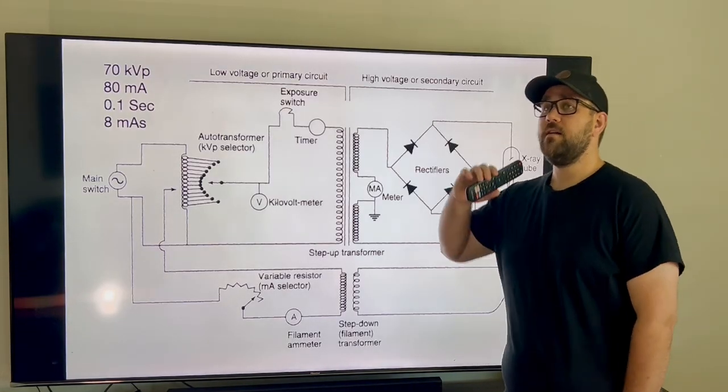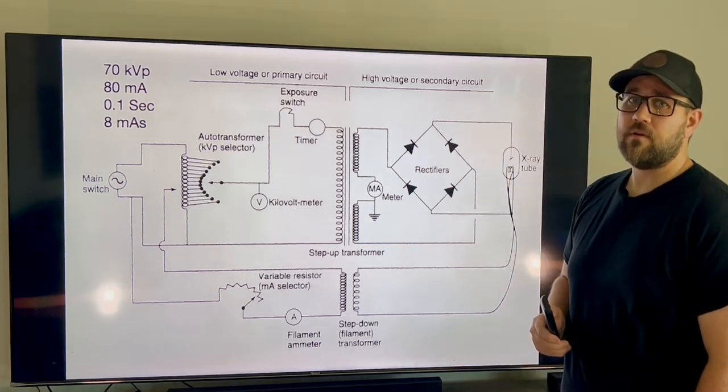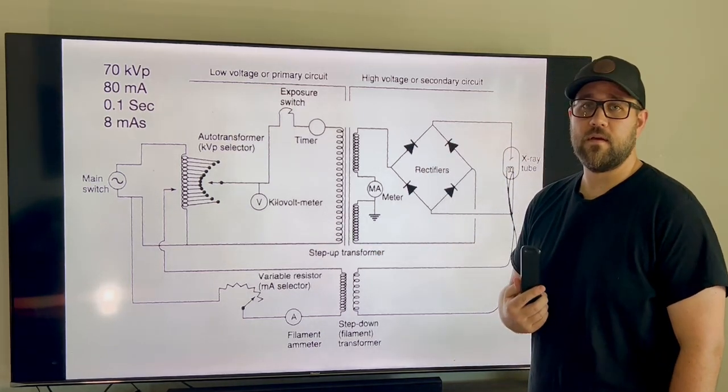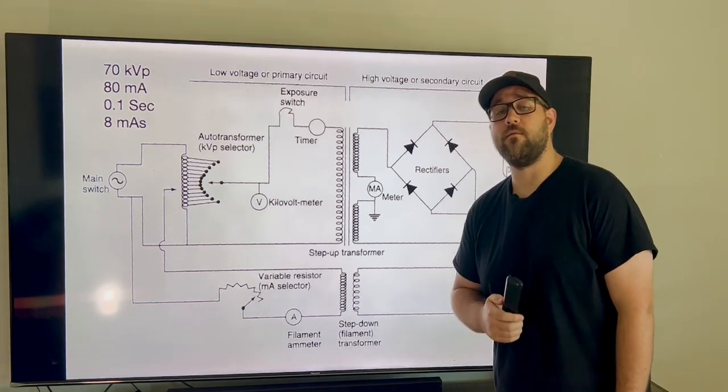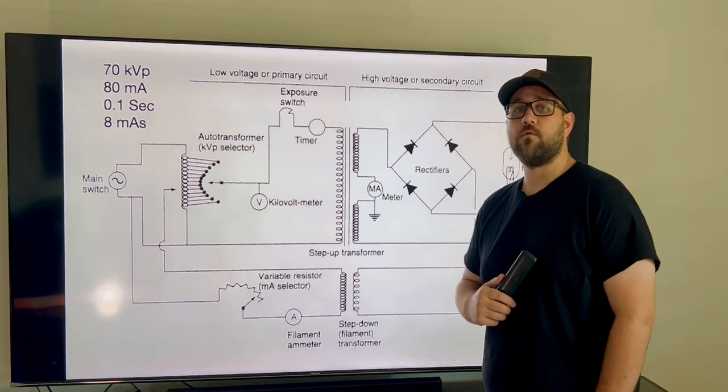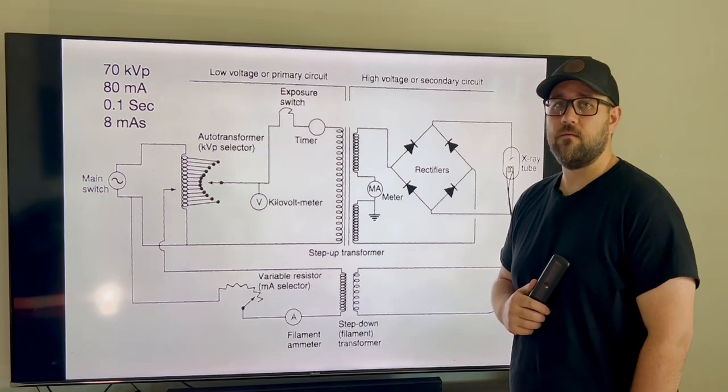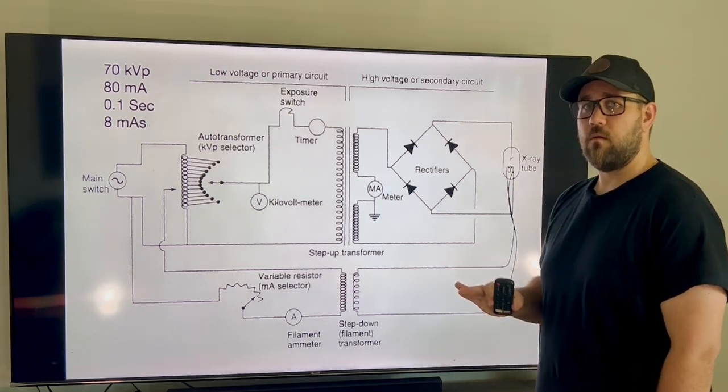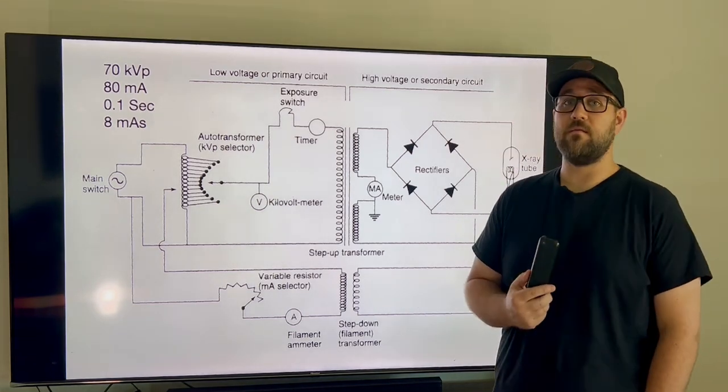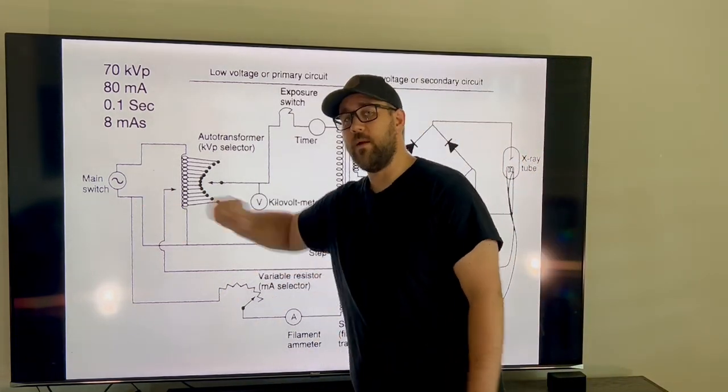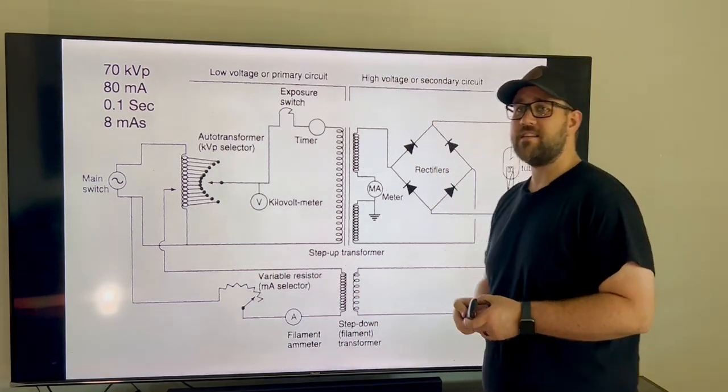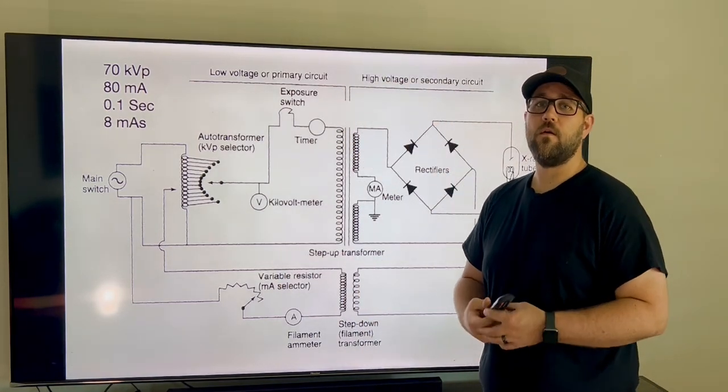To start off today, I want to talk about our electricity. So the electricity coming to our building is going to be 60 hertz at 220 volts. It'll hit a transformer and come inside our building, and inside our building it's going to run at 110 volts. To start off though, I want to go ahead and talk about our first thing we would do, and that would be hit our main switch. Our main switch is going to turn on the machine and it's going to start a procedure called the warm-up procedure.